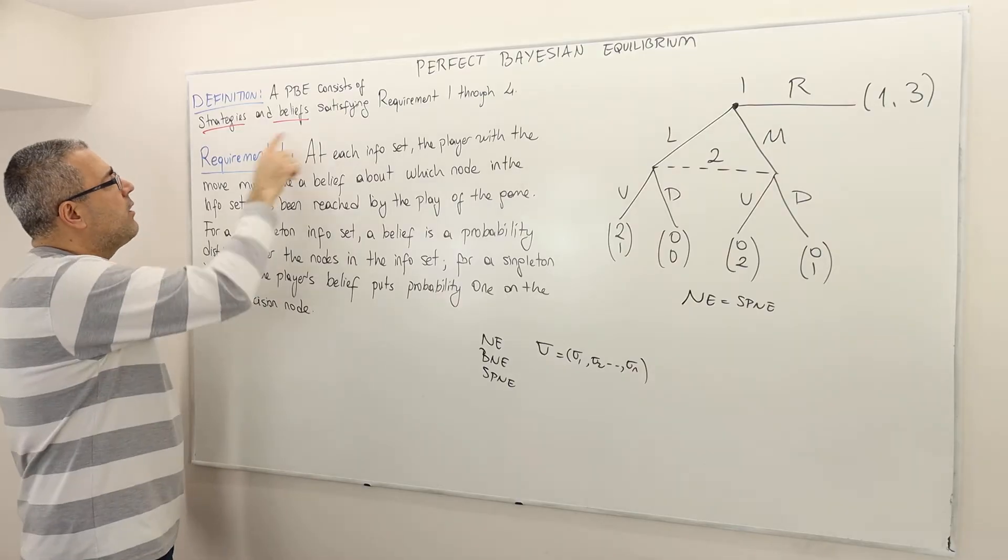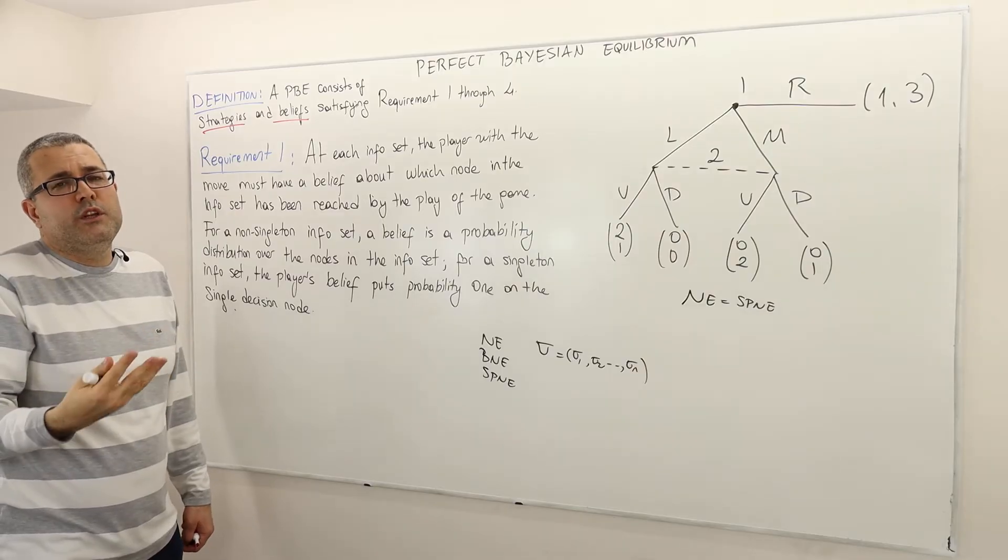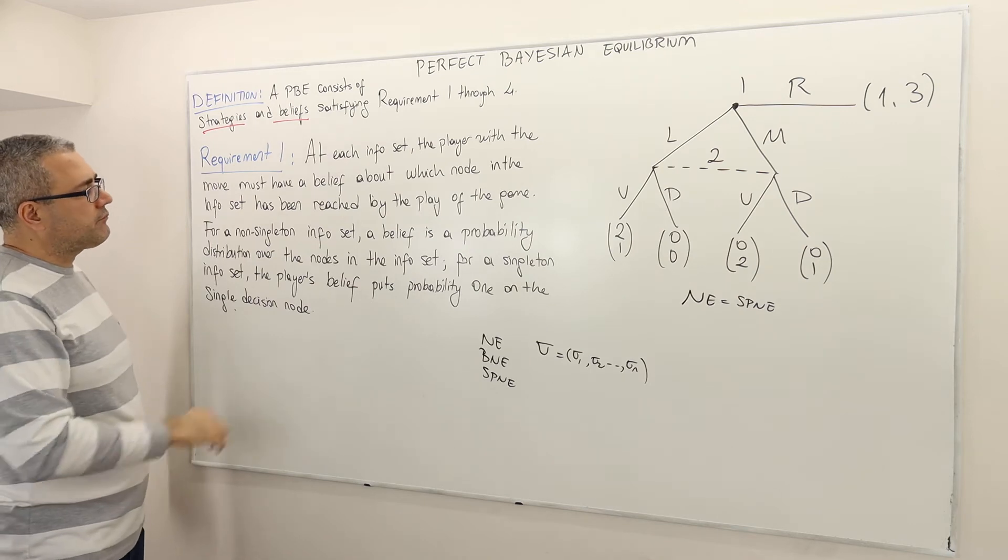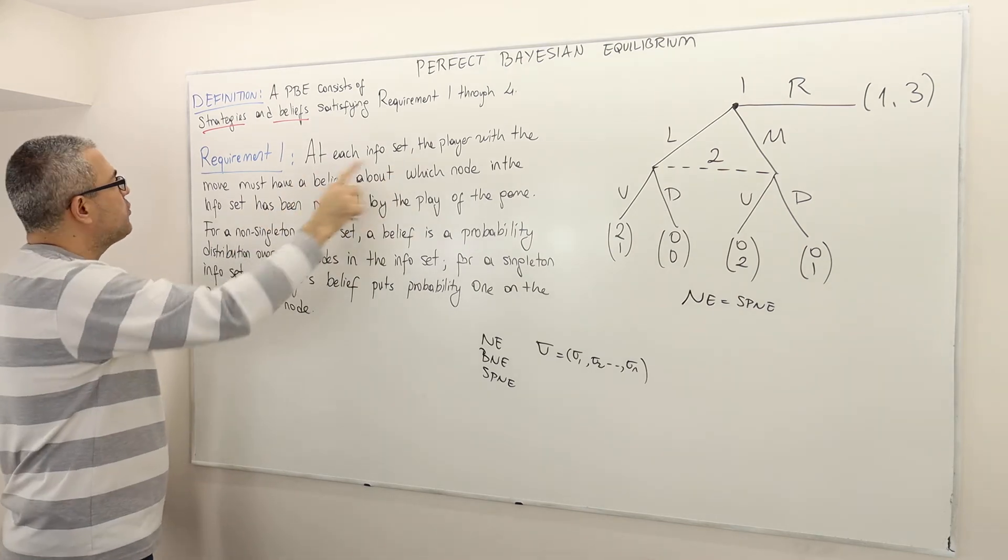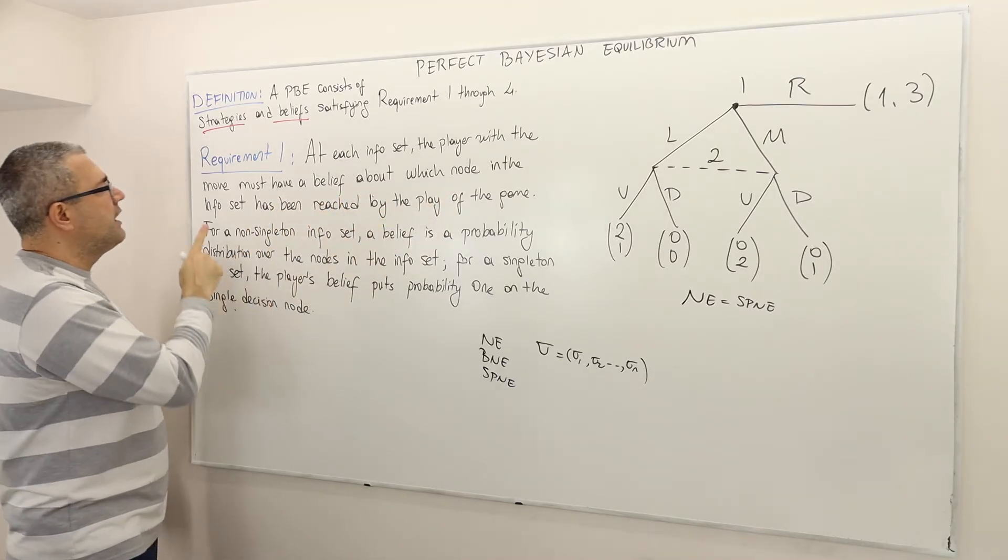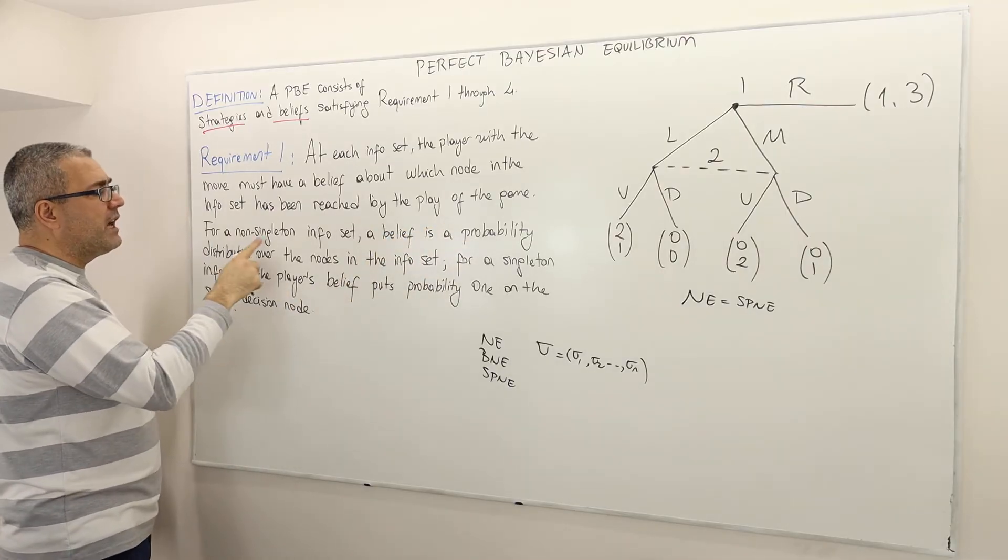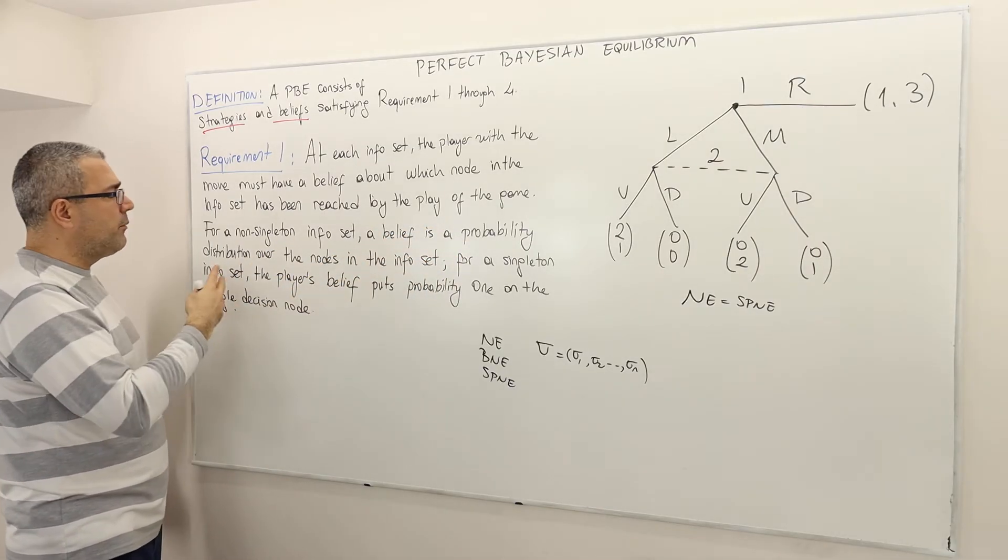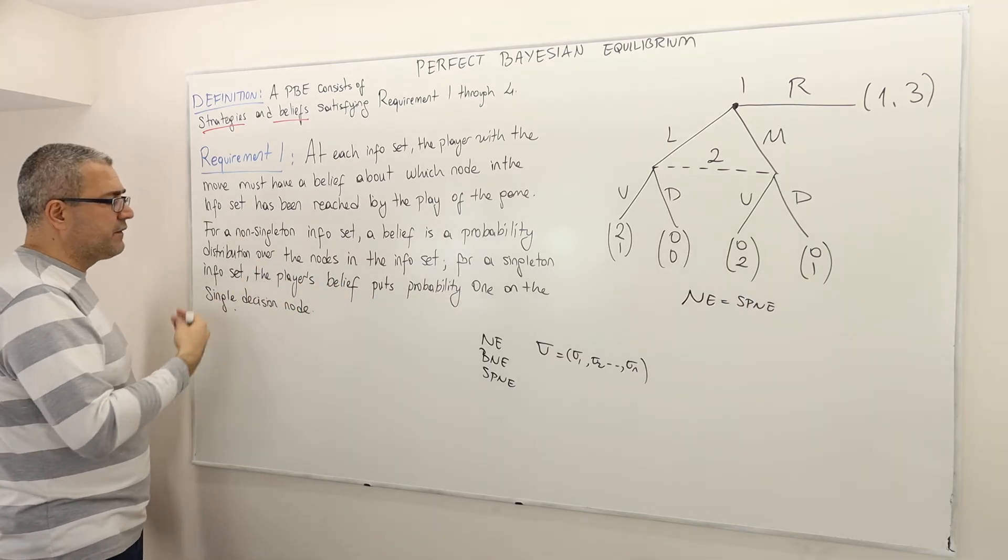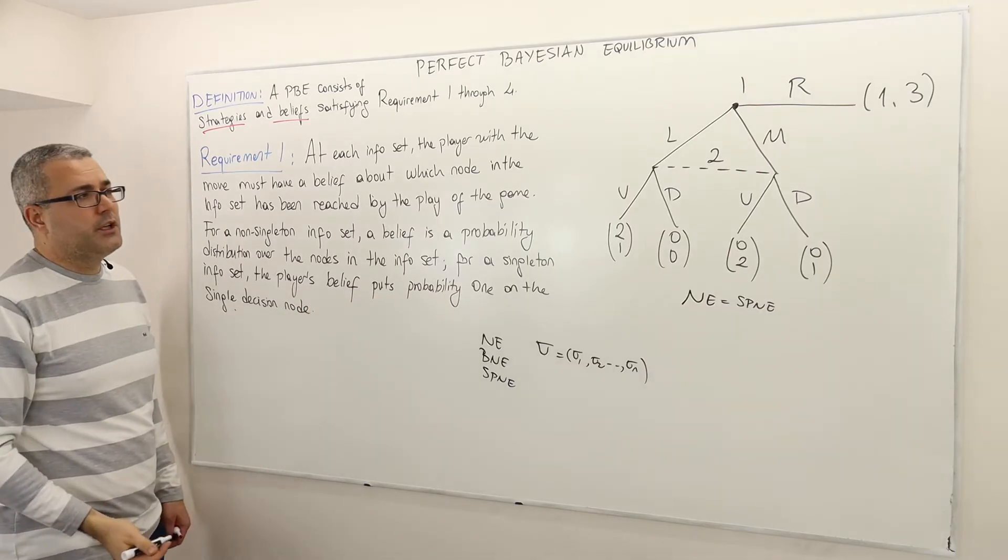Alright. Well now in the first requirement we will actually clarify what we mean by beliefs. We already know what strategy is. Alright. So the first requirement: At each info set, the player with the move must have a belief about which node in the information set has been reached by the play of the game. For a non-singleton information set, a belief is a probability distribution over the nodes in the information set. For a singleton information set, the player's belief puts probability 1 on the single decision node.